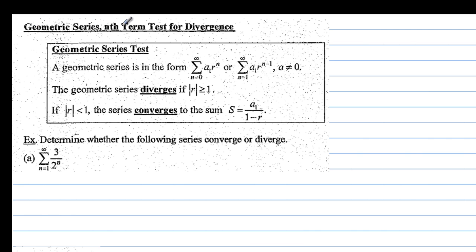The geometric series test: a geometric series has the form from n equals 0 to infinity of a sub 1 times r^n, or from n equals 1 to infinity of a sub 1 times r^(n−1), where a cannot equal 0. The series diverges if the absolute value of r is greater than or equal to 1. If the absolute value of r is less than 1, the series converges to a sub 1 over (1 minus r).